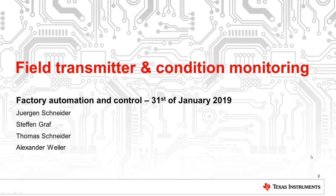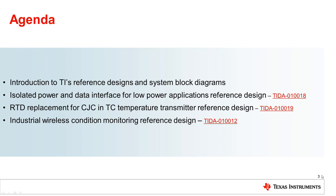Welcome to the factory automated control update. In today's session, we're going to talk about the field transmitter and condition monitoring. We start with an introduction to TI's reference designs and system block diagrams. Afterwards, we present the isolated power and data interface for low power applications reference design TIDA-010018, followed by the RTD replacement for cold junction compensation in thermocouple temperature transmitters TIDA-010019, and finally our industrial wireless condition monitoring reference design.